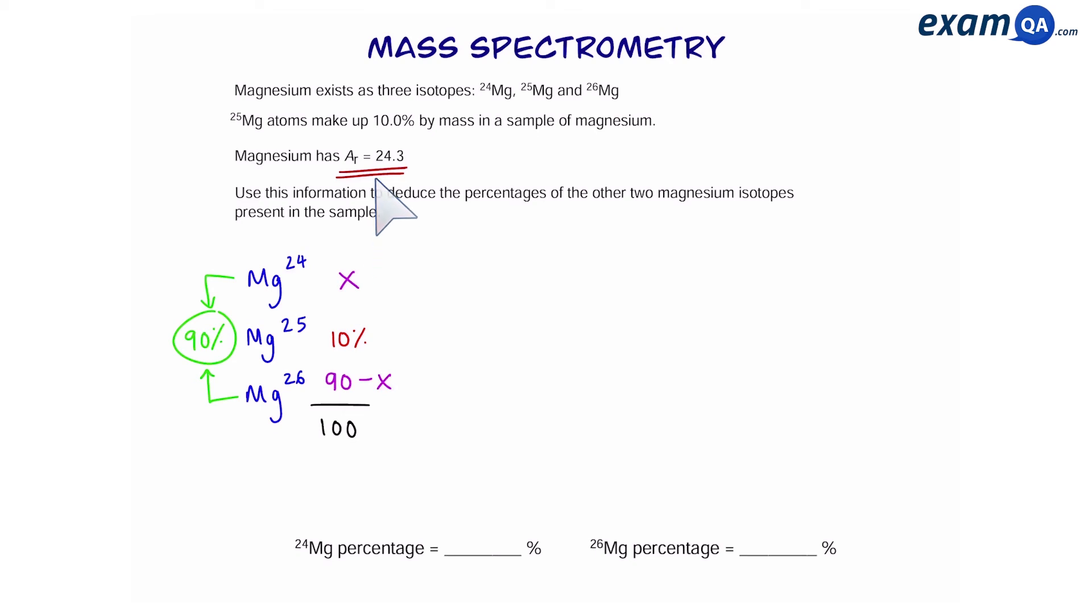So now we can make an equation and equal it to 24.3. So just like in the first example, we're going to do mass times abundance for all the different isotopes. Then we're going to divide it all by 100 because that is the total abundance. And that should equal 24.3 according to the question.